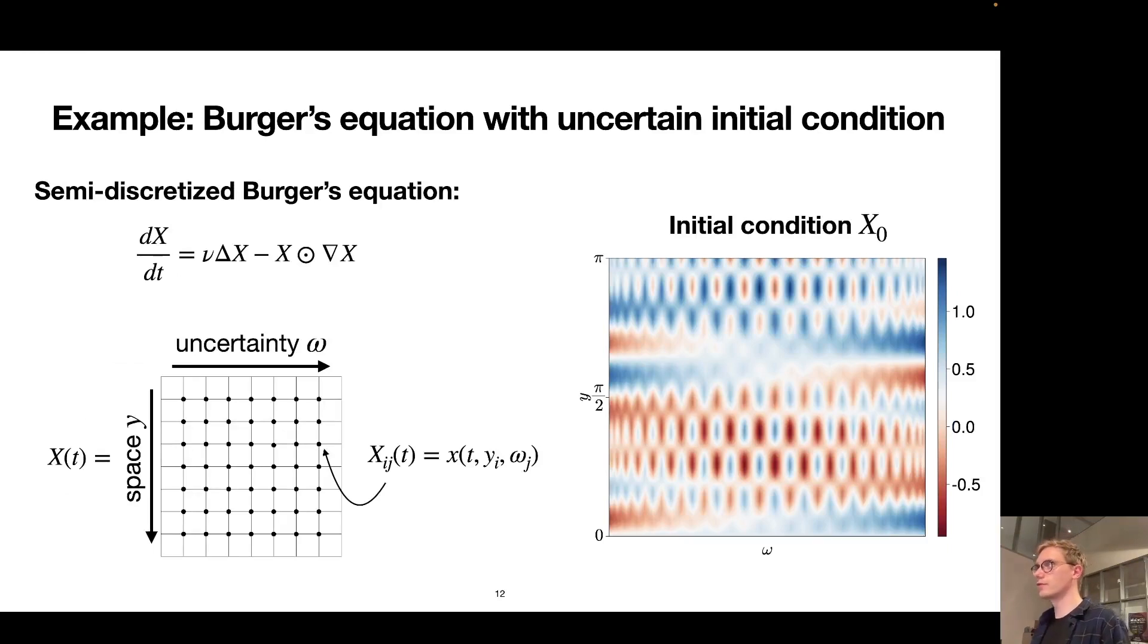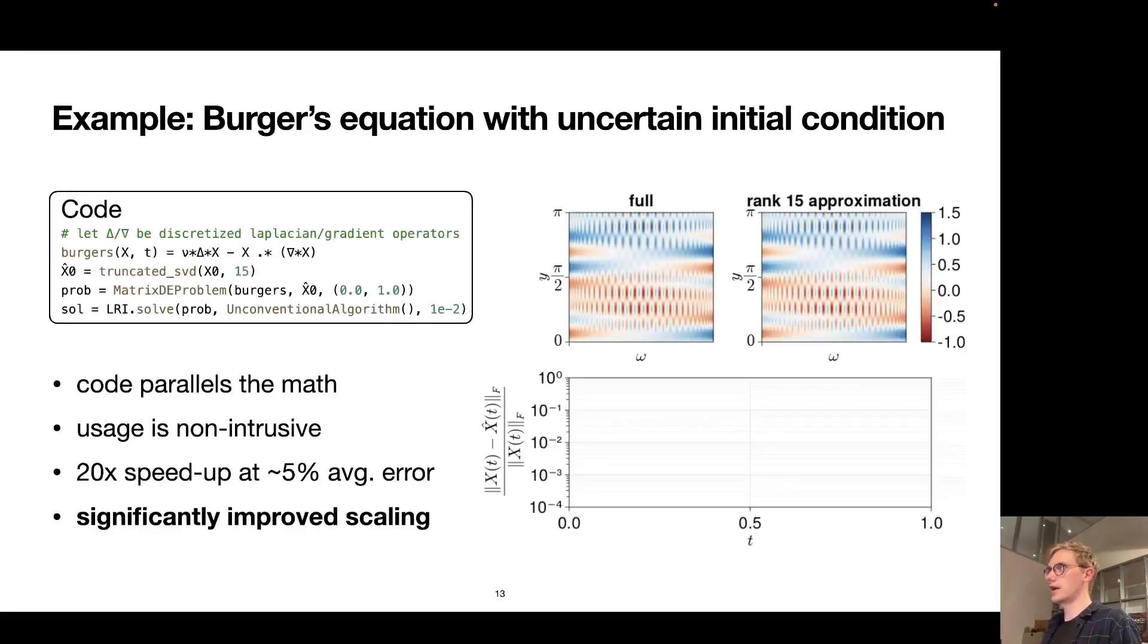Now to translate this problem into a form that is directly amenable to dynamical low-rank approximation, we can think of the spatial and stochastic domain as discretized, or put differently, the state of this problem is a large matrix where each row corresponds to a fixed position in space and each column to a fixed realization of the uncertainty or fixed initial condition in this case.